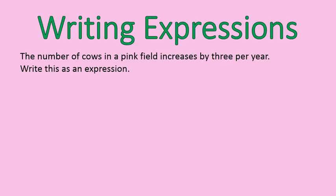When we're asked to write an expression, we're often taking sentences and making them into math operations and expressions. For example: the number of cows in a pink field increases by 3 per year. Write this as an expression. To do this, we use a variable — a letter that represents something we're looking for. I'm going to use the letter C for cows, and that is a term inside of my expression.